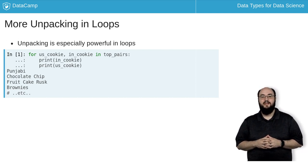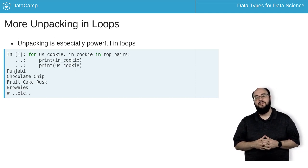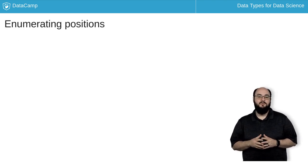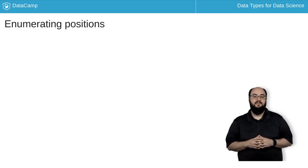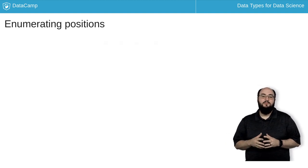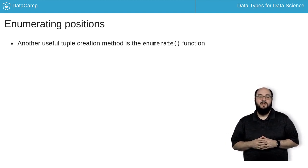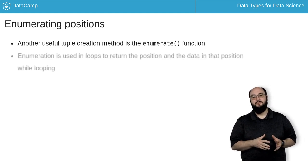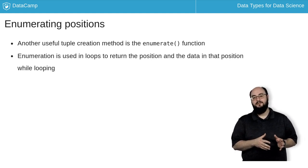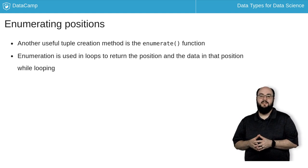Another use of tuple unpacking helps us keep track of which element in the iterable or list we are currently working on. Often we want to know what the index is of an element in the iterable. The enumerate function enables us to do that by creating tuples where the first element of the tuple is the index of the element in the original list, and then the element itself is the second.